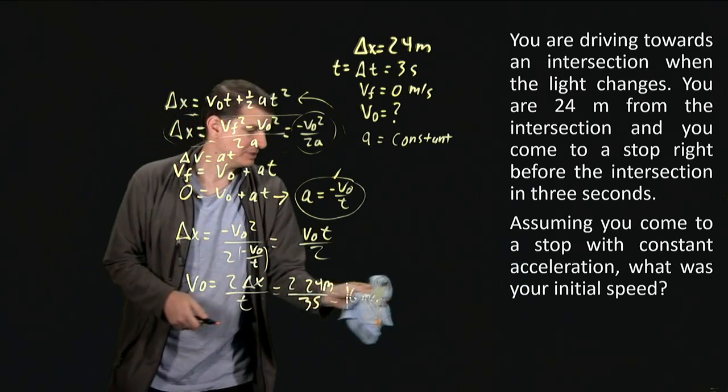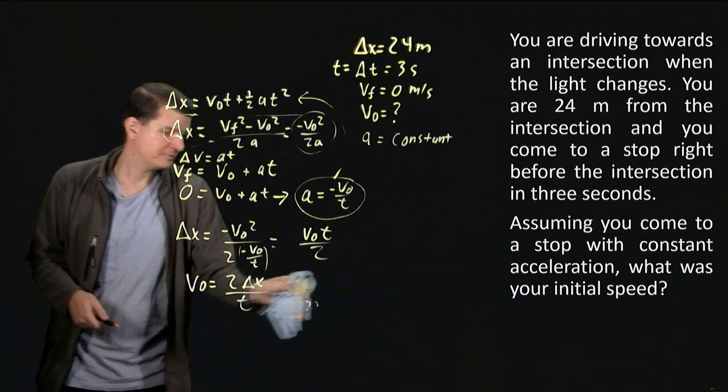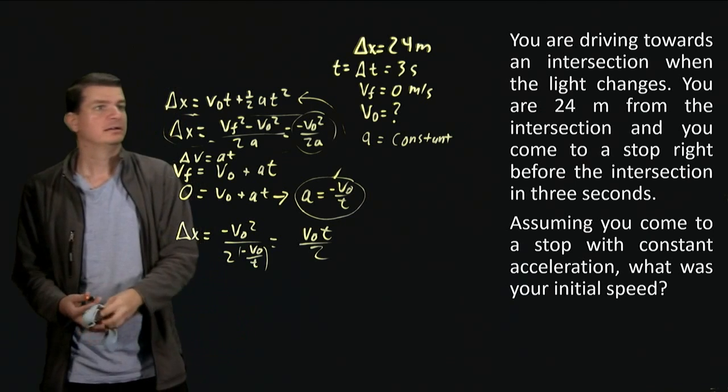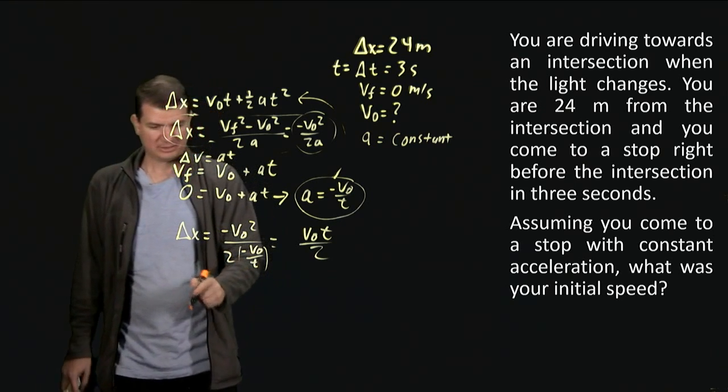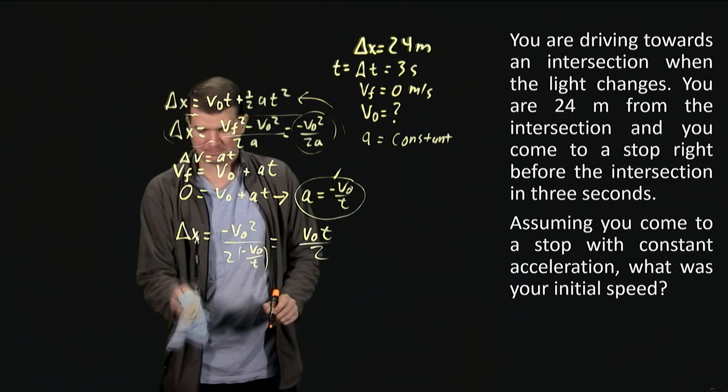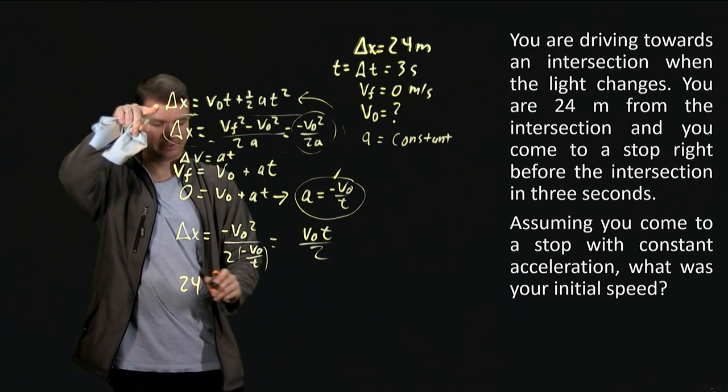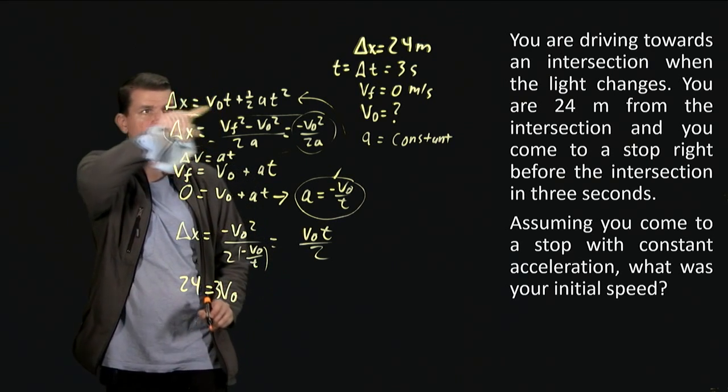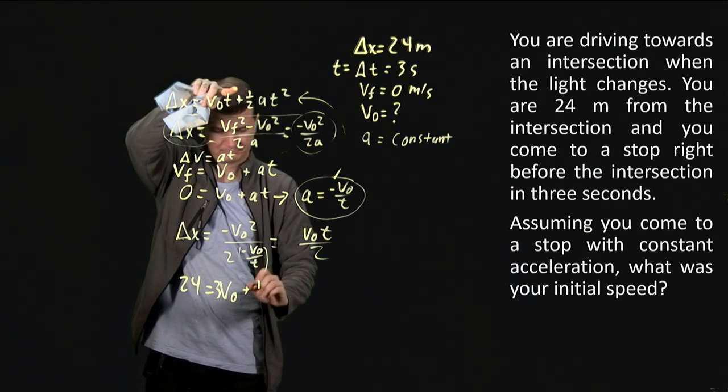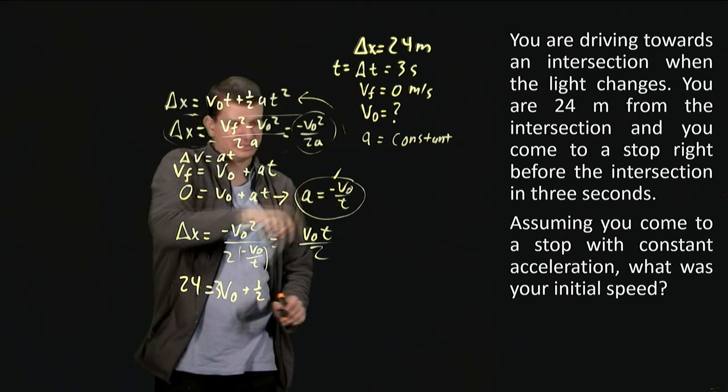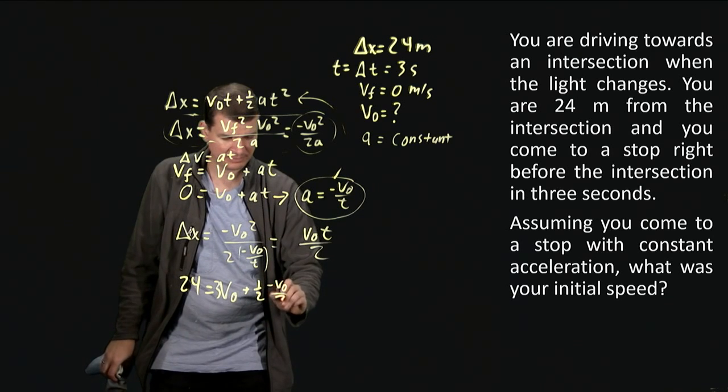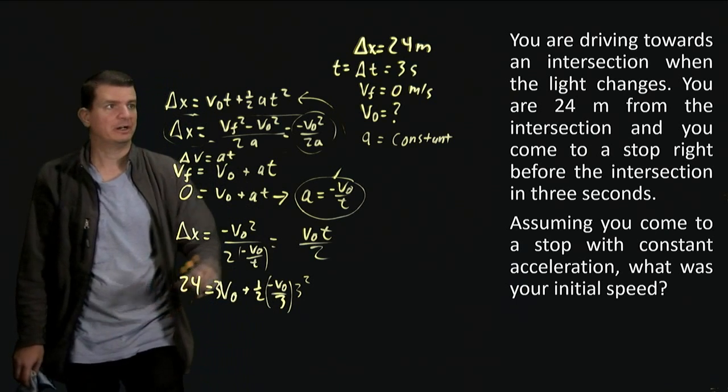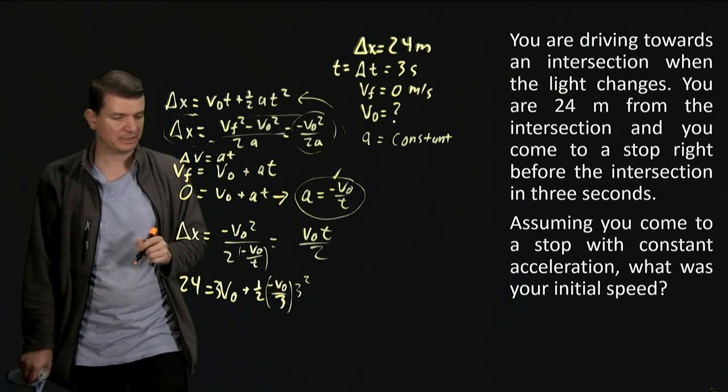So I'm going to replace the t's with threes. T squared is therefore going to be nine, so that makes that part easy. So I'm going to have that delta x which is 24, so I'm now plugging into this guy, is my v zero times three because t is three, my one half a is negative v zero over t is three, and three squared for my t squared coming from the actual equation that I'm plugging into.